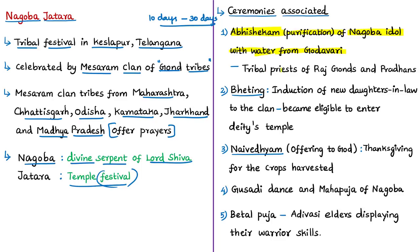Tribal priests are usually elders from the Rajgond and Pardan tribes. The festival includes a ceremony called 'betting,' where new daughters-in-law are formally inducted into the clan and become eligible to enter the temple. It also includes providing Naivedhyam — an offering of freshly harvested food grains in a bamboo basket as thanks to the gods for a plentiful harvest. There is also a Gusadi dance performance by dancers from the Gond tribal community, and in the night, the community performs Mahapuja of Nagoba.